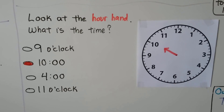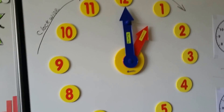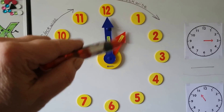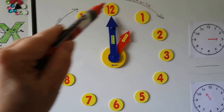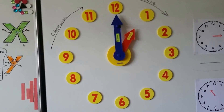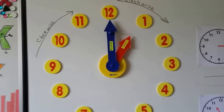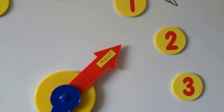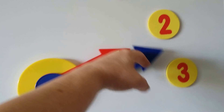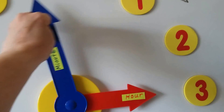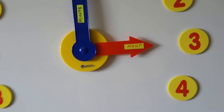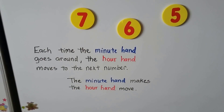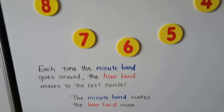Now I have a very big teaching tool clock. This is the minute hand, and that's the short hour hand. It goes clockwise around like that. As the minute hand moves, it moves the hour hand. Every time the minute hand goes around one time, the hour hand moves to a new number. The minute hand makes the hour hand move — they're connected with gears.